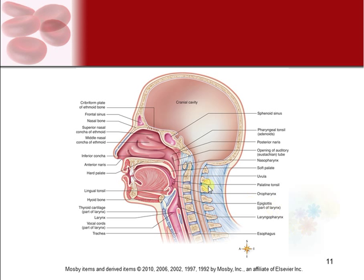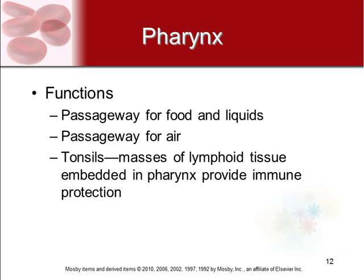In the picture you can see your nasal cavity, nasopharynx behind it, oral cavity, oropharynx, and then the laryngopharynx below — next to the trachea and esophagus. The functions of your pharynx include serving as a passage for both food and liquids and for air. It also contains your tonsils, which are masses of lymphoid tissue that provide that first line of immunity we discussed in the immune chapter.